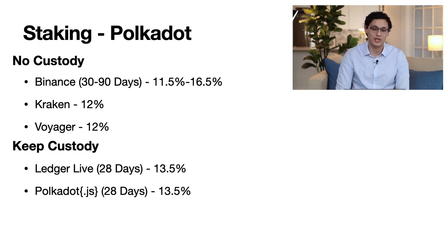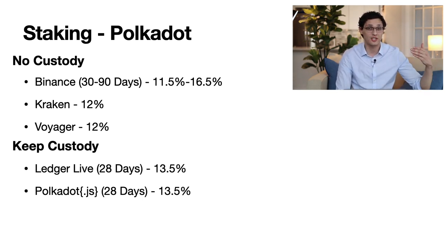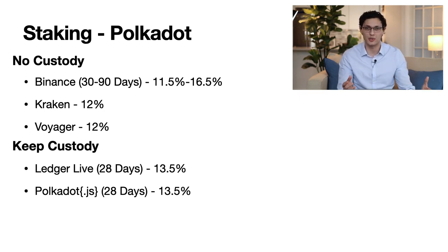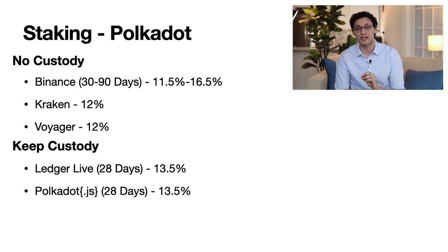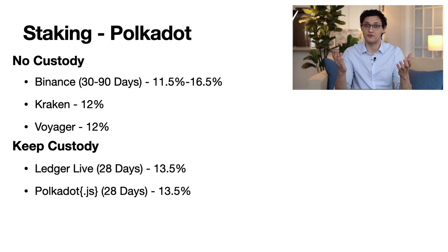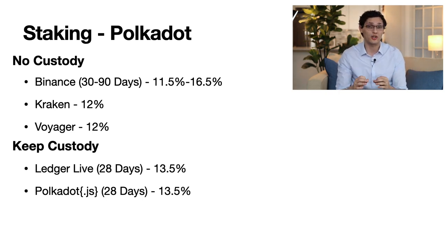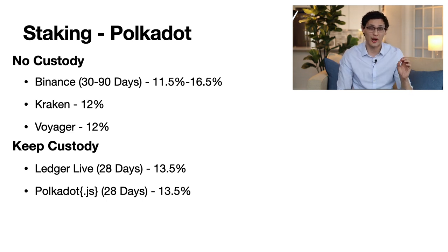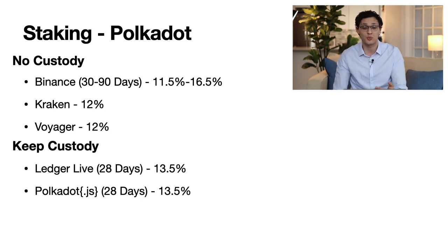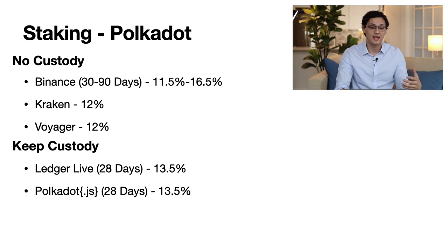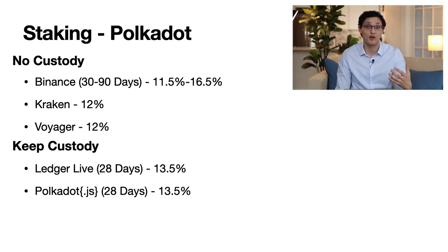If you want to keep custody, options like Ledger Live — where you lock tokens for 28 days — will pay out a 13.5 percent rate. Polkadot.js offers the same: tokens locked for at least 28 days at 13.5 percent. The downside of keeping custody yourself is it's slightly more complicated, there's a little bit more risk because you need to know what you're doing, and you need at least 40 DOT to stake. You also have to pick which validator you're going to support yourself — if you pick a bad validator that tries to fake a transaction or goes offline, you could forfeit the amount you staked. Overall, the easiest option to get started is probably Kraken, but the optimal solution would be to stake a certain amount with Binance up to their limit for 90 days and stake the remaining amount with Ledger Live or Polkadot.js.